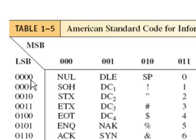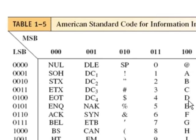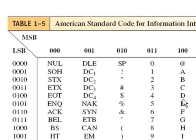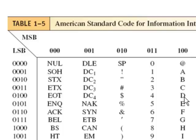Let's take a look at the capital letter D, for example. The capital letter D would start out with a 1, 0, 0, and then you go over to this location: 0, 1, 0, 0. So the capital letter D is a 7-bit string, and if you talk about this in hexadecimal, this would be worth a 4, and this would be worth a 4. So D is actually 44 in hexadecimal.